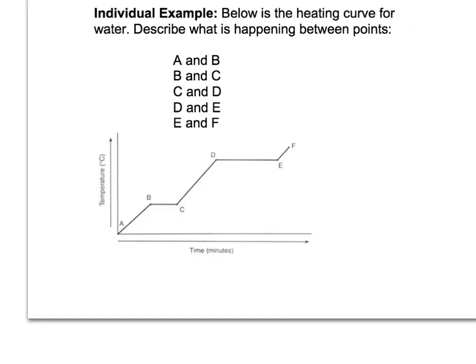Individual example: below is the heating curve for water — describe what is happening between these points. Pause the video and resume when you want to check your answer. So first we need to go individually and figure out what's happening at each of these points. Between point A and B — that would be right here — since we're going up, we are heating up ice, or if going the other direction, cooling ice.